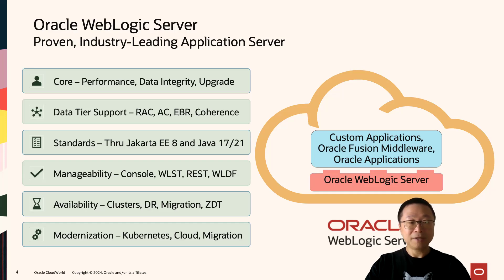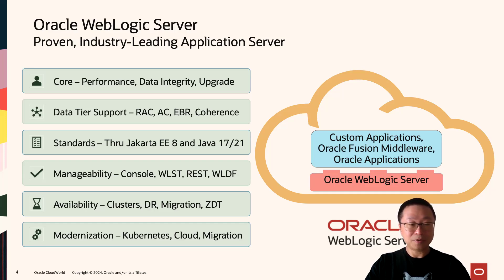With regard to manageability, we provide a wealth of different frameworks and tools. I'll be talking about the new remote console that replaces the admin console, along with scripting, REST APIs, and diagnostic frameworks that continue to be available with WebLogic. For availability, we provide clustering for high availability and disaster recovery so that you can migrate with zero downtime and without any data loss. For modernization, WebLogic can be run in a Kubernetes cluster using the WebLogic Kubernetes Toolkit, also available on GitHub, which reads the configuration of a WebLogic domain and outputs a YAML configuration file that can be easily deployed onto Kubernetes.